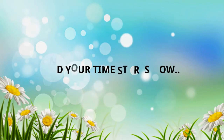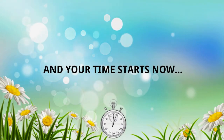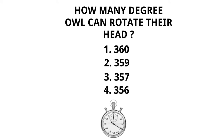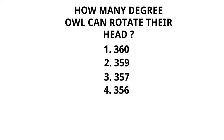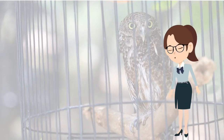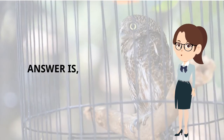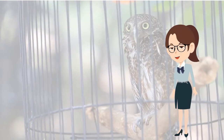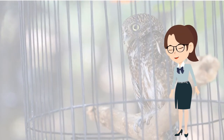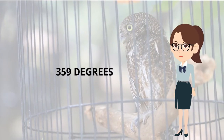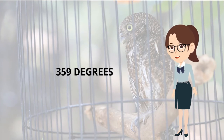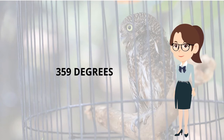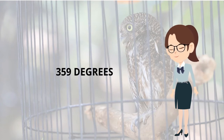Your time starts now. Now we will see the advanced level question's answer — the answer is Option 2. Can you remember what we saw in Option 2? The answer is 359. Yes, an owl can rotate its head up to 359 degrees. Really interesting! Mind it and note the answer — it may be useful to you.